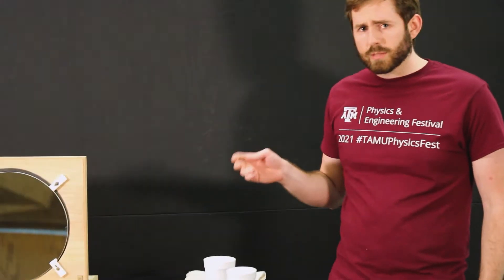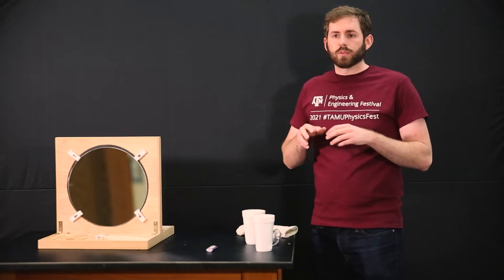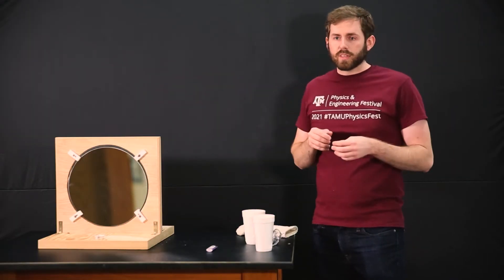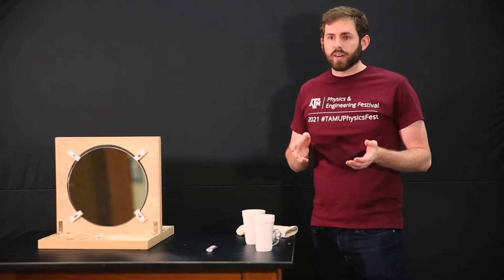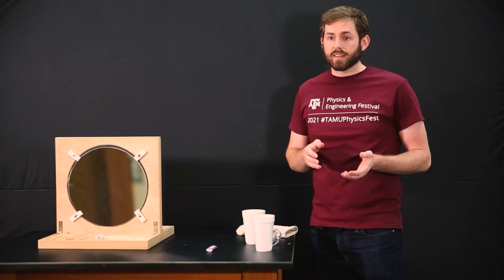You might know that hot air becomes less dense and rises, and cold air becomes more dense and sinks, but it also changes how light interacts with the air. You've seen this before if you've ever seen a mirage, say hot wavy lines coming off the desert reflecting a lake in the distance, or possibly just coming off your very hot car on a summer day in Texas.